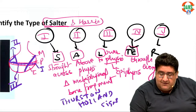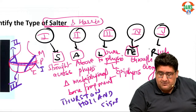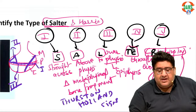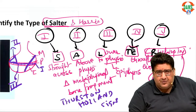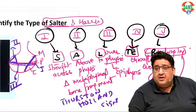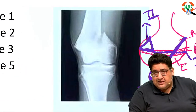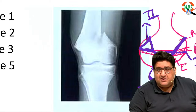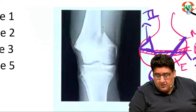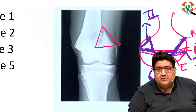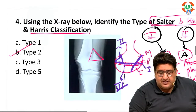Then you have type 5, which is R — R means crush — a crushing injury where the entire growth plate gets crushed. Looking back at the X-ray, I cannot see any crushing, nothing straight across, nothing lower to physis. All I can see is a triangular metaphyseal fragment — the Thurston-Holland sign. So it is a clear-cut example of type 2.